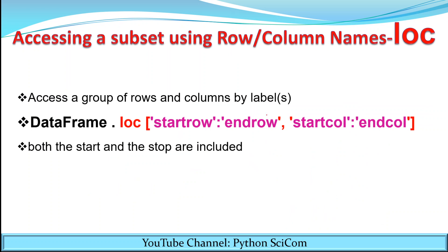Next, if you want a group of rows or a group of columns — that is a subset — from the DataFrame, you use LOC. A subset means the part of the DataFrame: a group of certain rows and certain columns which are labeled. The syntax is dataframe.loc[] — note that loc is an attribute, not a function, so you use square brackets. Inside, you provide a range for the row and a range for the column: start_row:end_row, start_column:end_column. One important thing: in LOC, the end value is included.